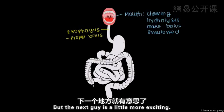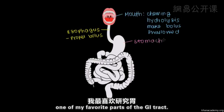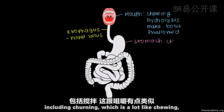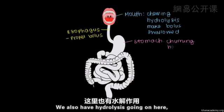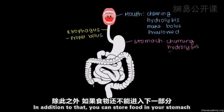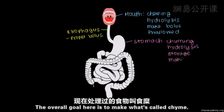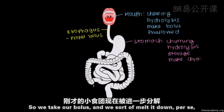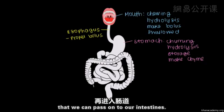The next stop is a little more exciting — now we get to the stomach. A lot of action going on here; one of my favorite parts of the GI tract. The stomach is responsible for multiple things, including churning, which is a lot like chewing except there are more dimensions of contraction affecting and breaking down the food. We also have hydrolysis — the enzyme-assisted breakdown of food. In addition, you can store food in your stomach if it's not time to pass it on. The overall goal here is to make what's called chyme: we take our bolus and melt it down into a more fluid substance that we can pass on to our intestines.